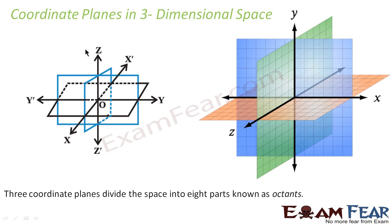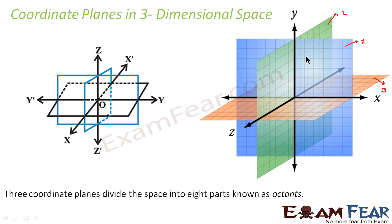Now let's start with the coordinate planes in three dimensional. In three dimensional, there are three planes. So if you see, this is plane one — the blue plane — plane two is the second plane and the red plane is the third plane. There are three planes. With three planes, you get three dimensional space.